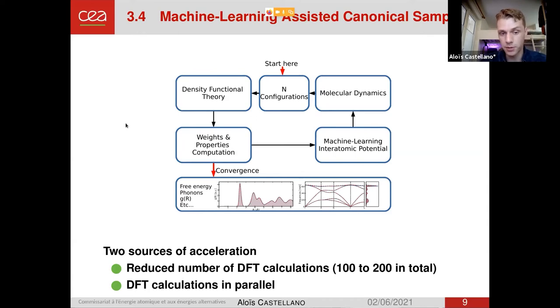And this property can be free energy, it can be the phonons at finite temperatures, the pair distribution function, but can also be, for example, electronic properties, such as the electronic density of states. With this method, we can see two sources of acceleration. First, a reduced number of DFT calculations. Since all the configurations are completely decorrelated in their construction, we can need only hundreds of configurations maximum, compared to the thousands or tens of thousands for ab initio molecular dynamics. Also, all the DFT calculations are done in parallel. Here, we generate, as I said, 20 configurations. Well, we can do the 20 configurations in parallel.